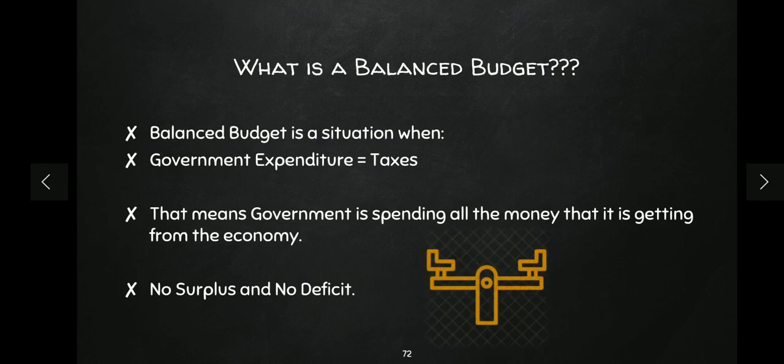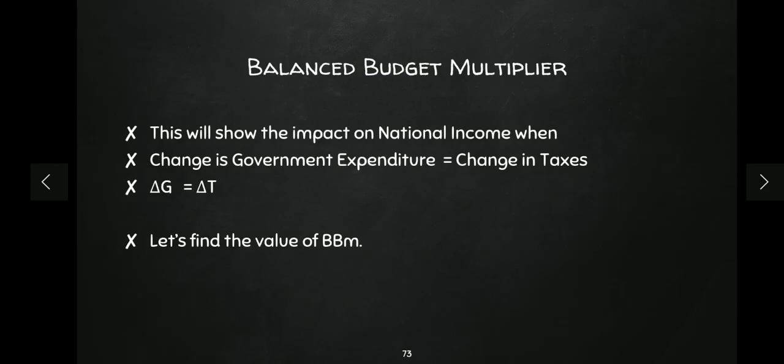Now the question comes: what is the balanced budget multiplier? Balanced budget multiplier means that whatever change has come in government taxes, the government is also changing its expenditure by the same amount. That means change in government expenditure is equal to change in taxes. Keep in mind, multiplier means when there is a change in any spending, how much change comes in national income — we want to find that.